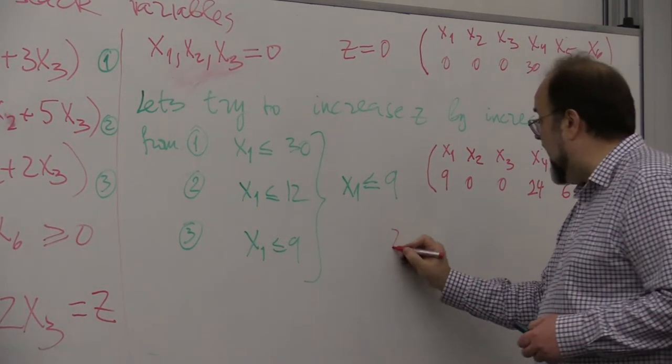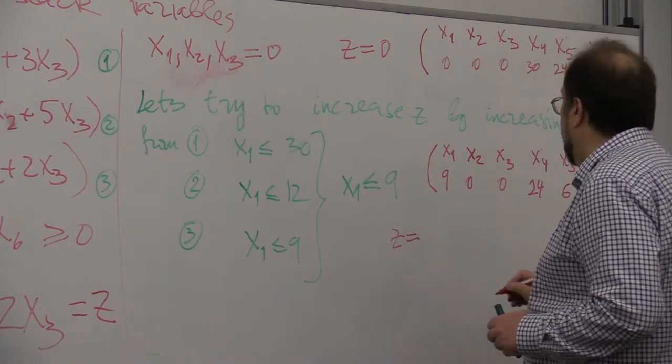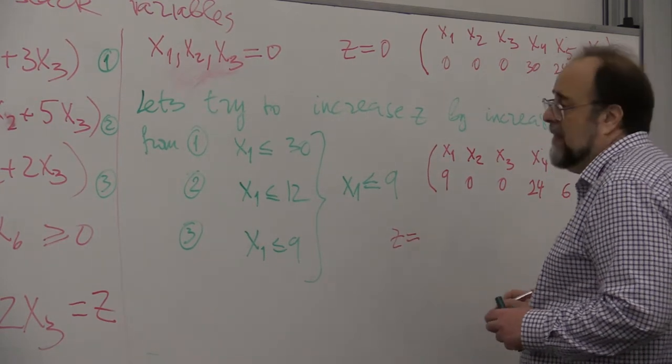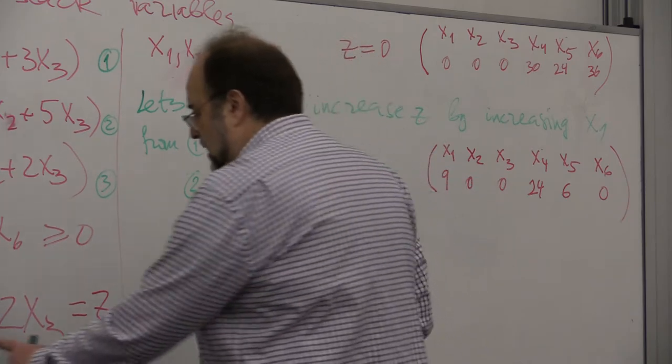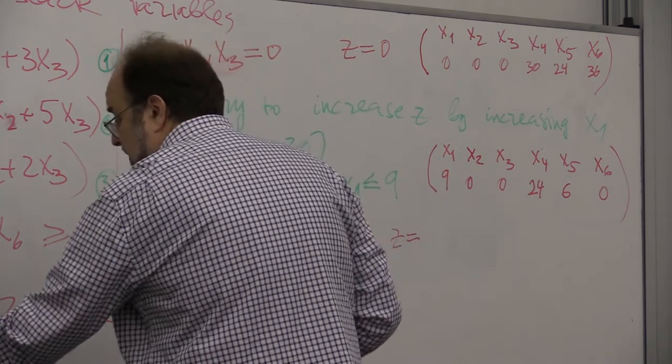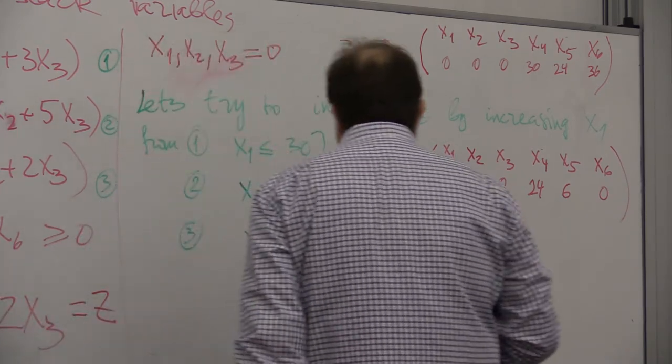And what is the z value? The z value will be, let's see, where is my z? Here, this is 0, 0, and this is 9, so this is 27.